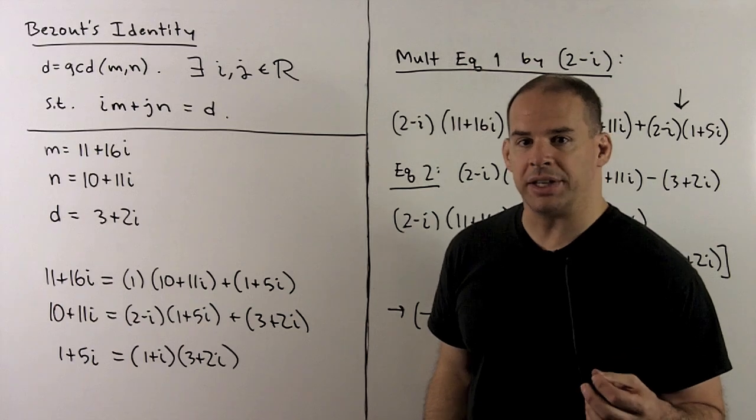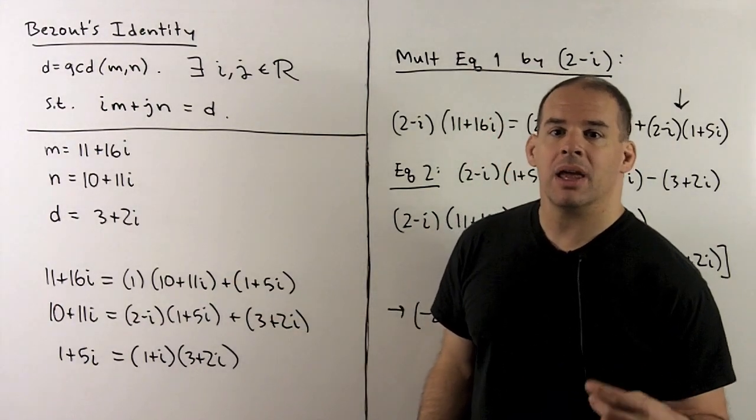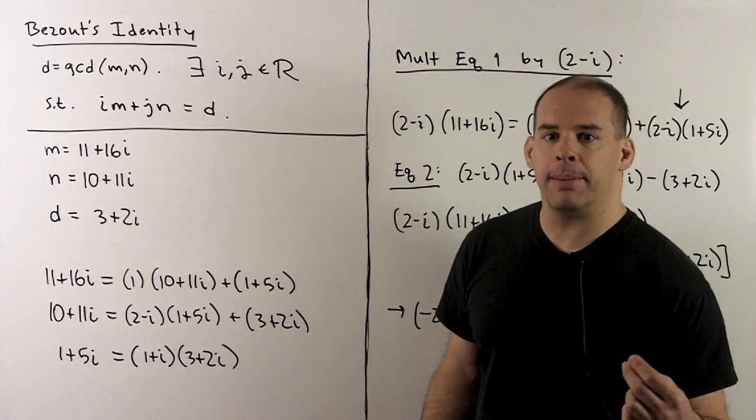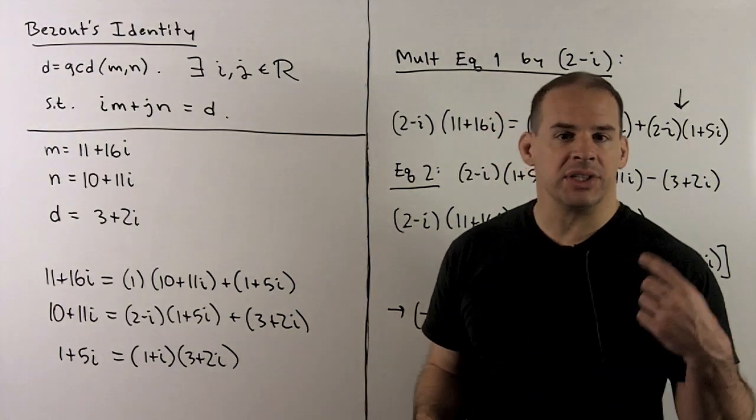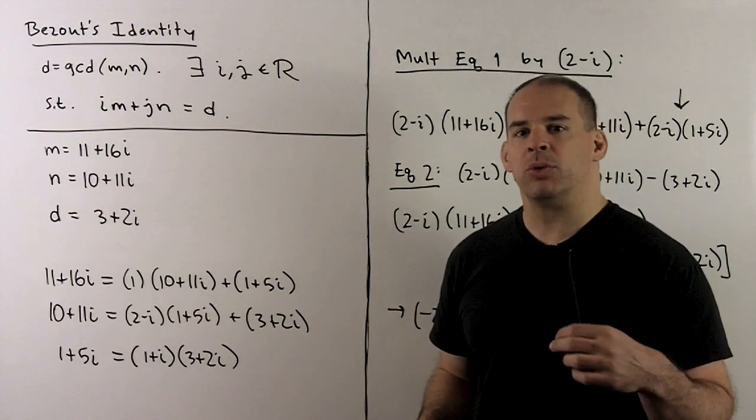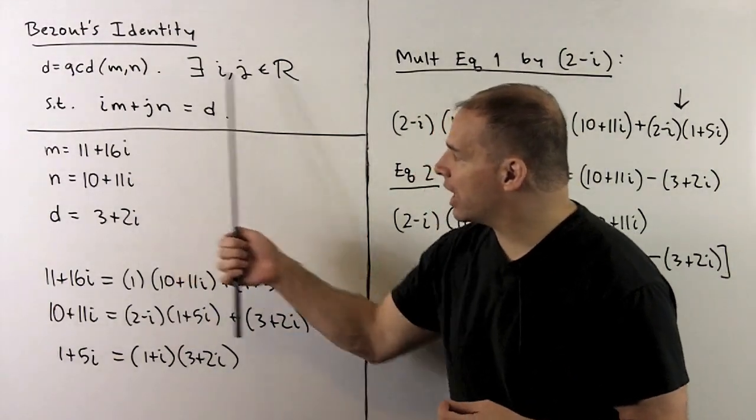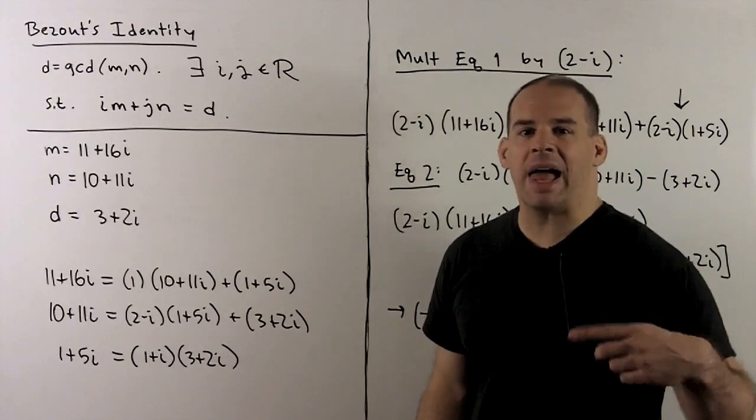How about Bezout's identity? This states d is equal to the greatest common divisor of m and n. Then there always exists i and j in our Euclidean domain such that im plus jn is equal to d. Now the statement itself gives no indication of how to find i and j. But if we've worked out the Euclidean algorithm, we can always find these items from our equations.